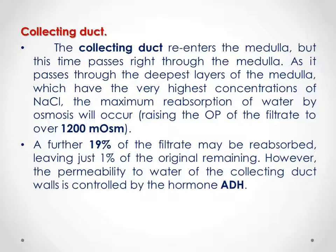The collecting ducts re-enter the medulla, passing through the deepest layer of the medulla, which has the very highest concentration of NaCl. Here, the maximum reabsorption of water by osmosis occurs, and the osmotic pressure of the filtrate rises again to 1,200 mOsm. A further 90% of the filtrate is reabsorbed, leaving behind just 1% of the original filtrate to pass with the urine. However, the water permeability of the collecting ducts is controlled by another hormone, antidiuretic hormone (ADH). So, we have two hormones involved in regulating absorption and osmotic pressure: aldosterone and antidiuretic hormone.